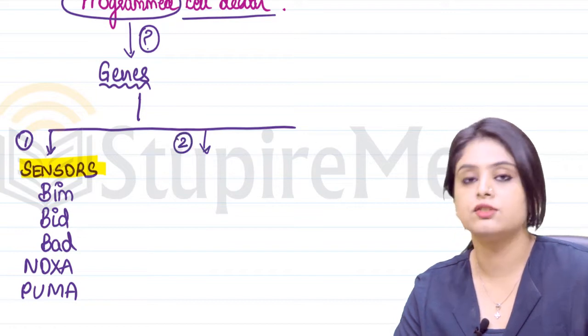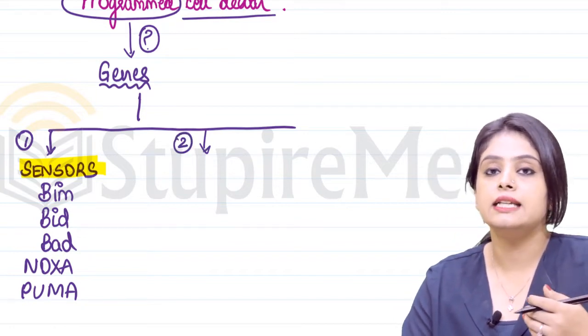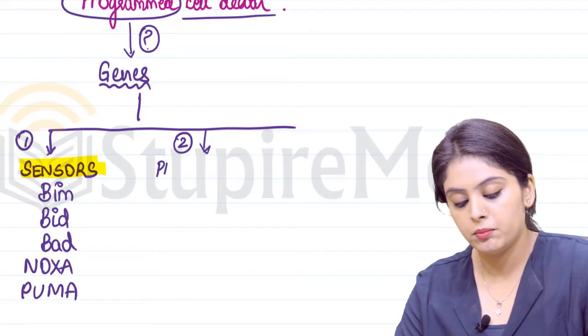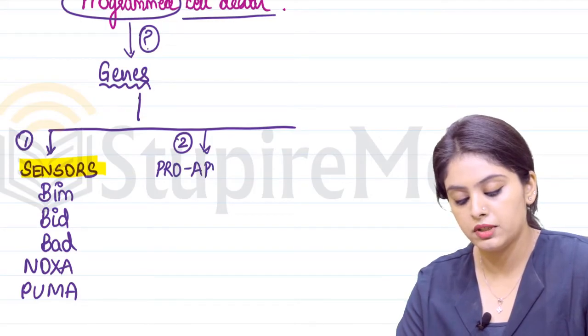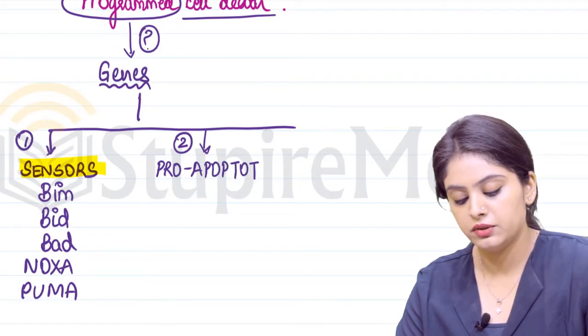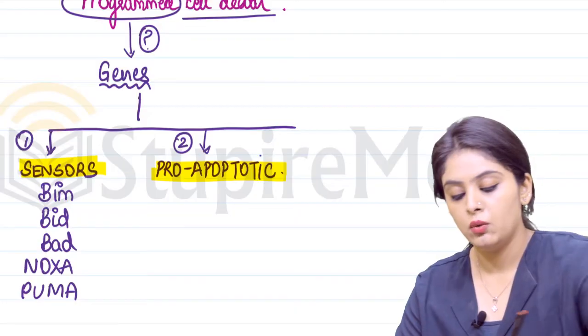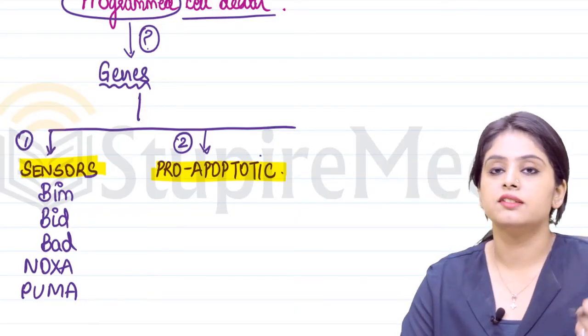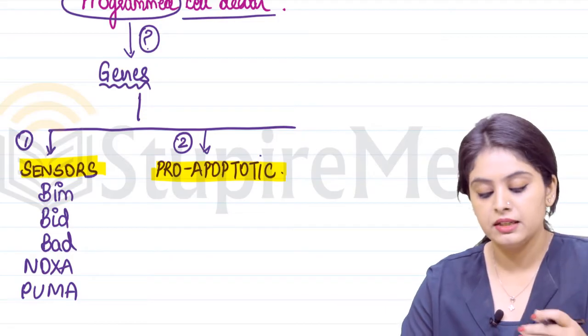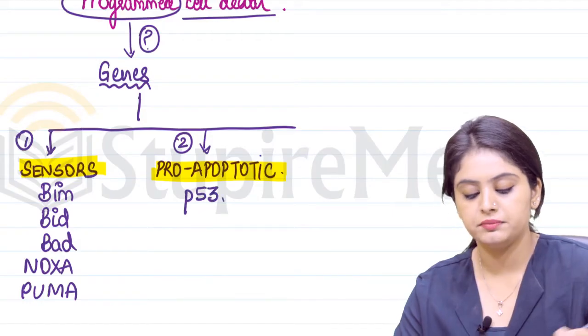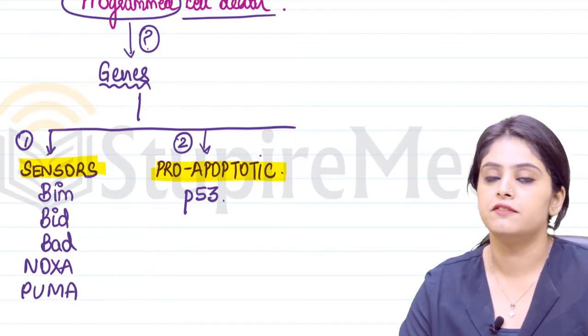The second list of genes we need to know are genes which increase apoptosis. What do we call them? We call them pro-apoptotic genes. What are the genes in this list? This will include the first and most important, that is P53.